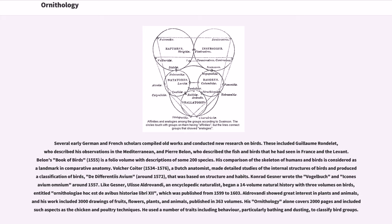Several early German and French scholars compiled old works and conducted new research on birds. These included Guillaume Rondelet, who described his observations in the Mediterranean, and Pierre Belon, who described the fish and birds he had seen in France and the Levant. Belon's Book of Birds is a folio volume with descriptions of some 200 species, and his comparison of the skeleton of humans and birds is considered a landmark in comparative anatomy. Volcher Coiter, a Dutch anatomist, made detailed studies of the internal structures of birds and produced a classification of birds, De Differentiis Avium, based on structure and habits.